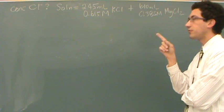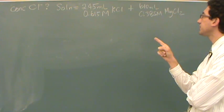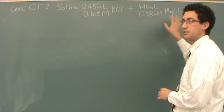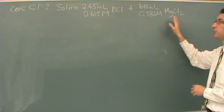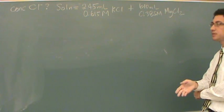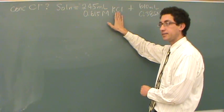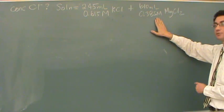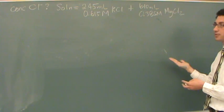For this kind of problem, if you want the concentration of Cl⁻, you have two sources that are being mixed in solution, so you've got to count for both. What I'd recommend whenever this happens: find the moles contributed by this one, separately find the moles contributed by this one, and add them together, because these are the only two sources.